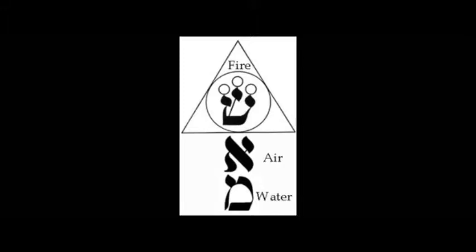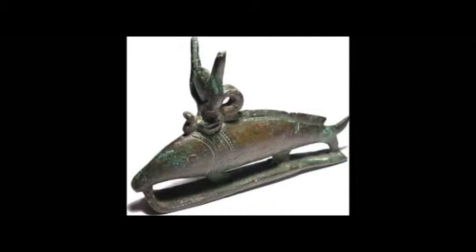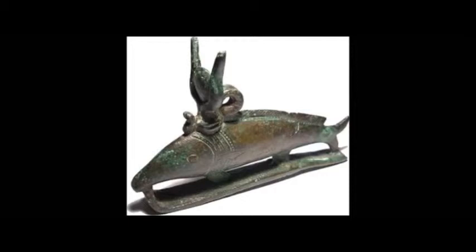The name Jonah in Hebrew is written with the letters Yod, Vav, Nun, and He — pronounced Yonah. The letter Yod symbolizes the first triangle, the head, Keter. The letter Vav represents the spinal column, in which the Son of Man is created. The true man has seven bodies: Gesed, Geburah, Tiferet, Netzach, Hod, Yesod, and Malkuth.